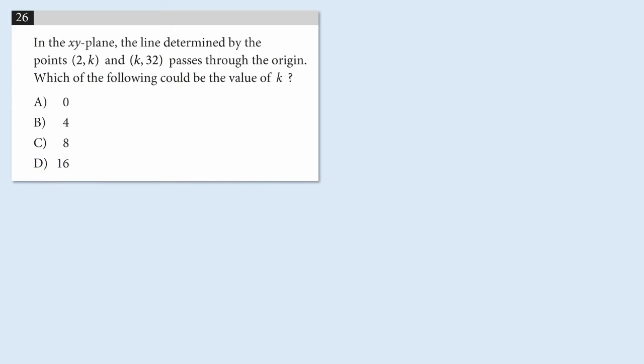This multiple choice math problem comes from the college board. It's from section four of the SAT test, which does allow calculators. And the problem says, in the xy plane, the line determined by the points (2,k) and (k,32) passes through the origin.